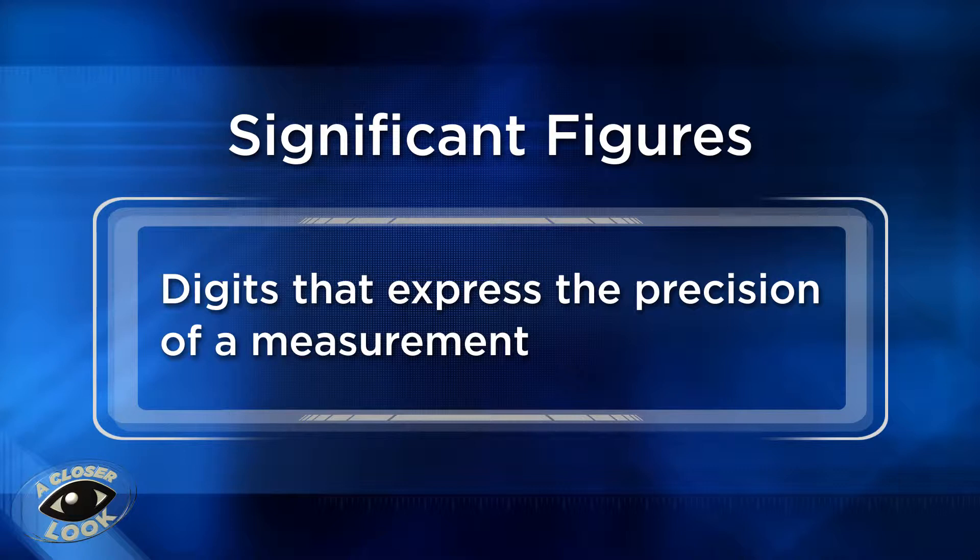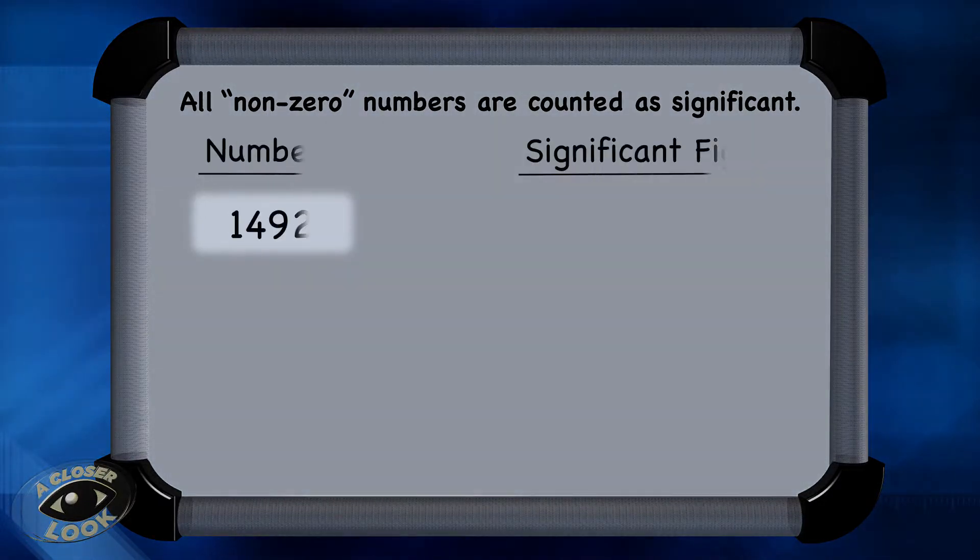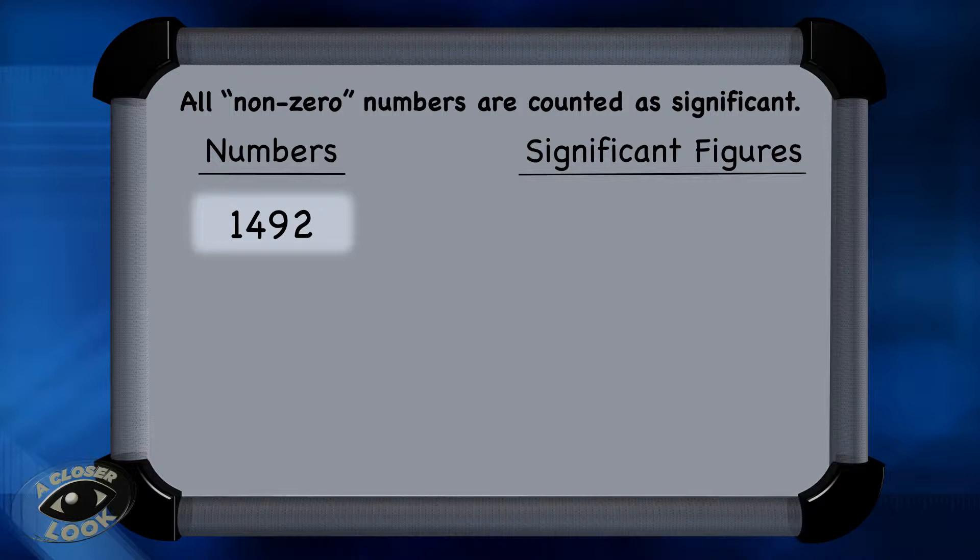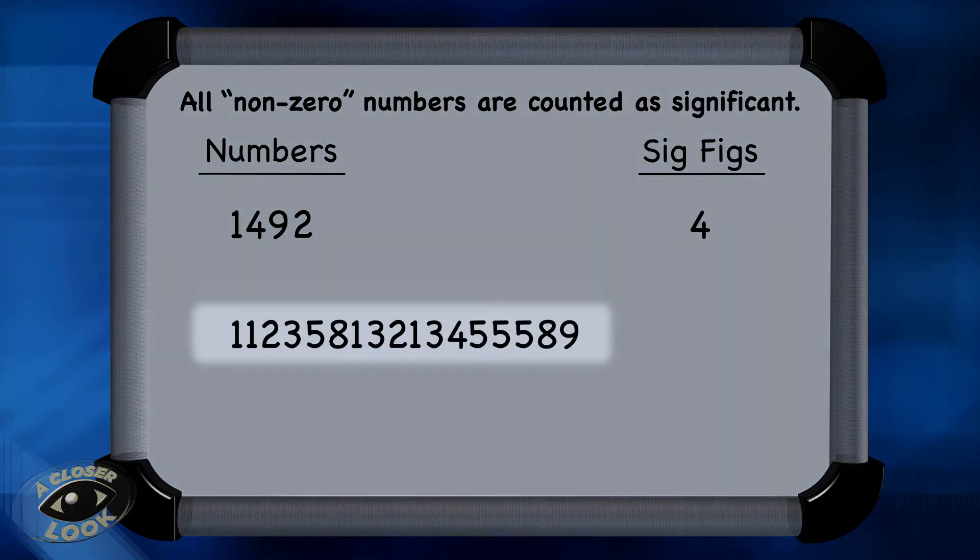Here is a brief review of the rules for determining how many significant figures are in a given value. All non-zero numbers are counted as significant. In the number 1492, for instance, all the values are non-zero, so count all four. It has four significant numbers, which can be referred to as sig figs for short. Here's another example of a group of non-zero figures, and all 16 numbers count as significant.